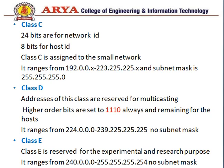Next is Class D, which is used for multicasting. In Class D, 4 bits are reserved — specifically 1110. These are fixed bits and the remaining bits are used for the network. Its range is from 224 to 239 and it does not have a subnet mask. Class E is reserved for experimental and research purposes. Its range is from 240 to 255 and it also does not have a subnet mask.